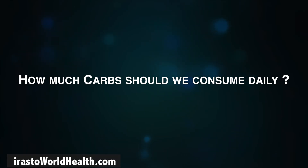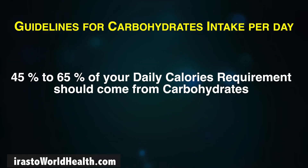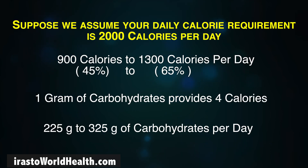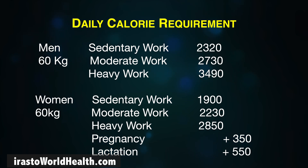How much carbs should we consume daily? The dietary guidelines recommend that 45 to 65% of your daily calories should come from carbohydrates. Suppose your daily calorie requirement is 2,000 calories per day, then 900 to 1,300 calories per day should come from carbs. Since one gram of carbohydrates provides four calories, that comes up to 225 to 325 grams of carbohydrates per day. The ideal daily calorie requirement for men and women varies due to a lot of factors.